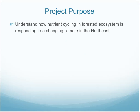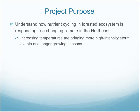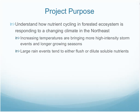The purpose of this project is to look at how a changing climate in the Northeast is affecting how nutrients cycle in forested ecosystems. We care about this because there is an undeniable increase in mean temperature happening in the Northeast. This increase in temperature is bringing more high intensity storm events in addition to extending the growing season. In forested ecosystems, large rain events tend to either flush out or dilute soluble nutrients.